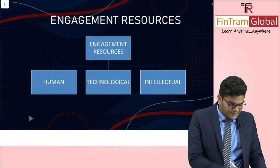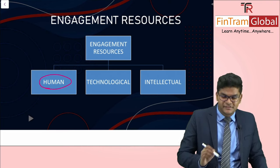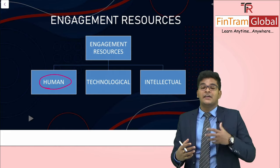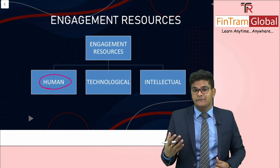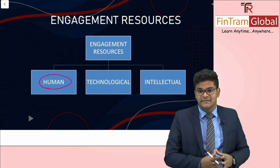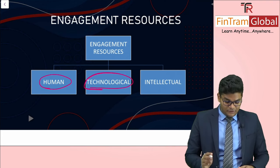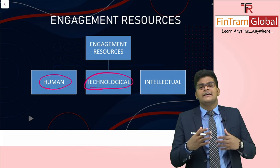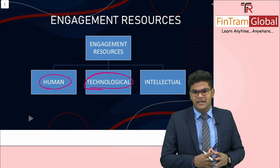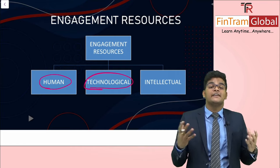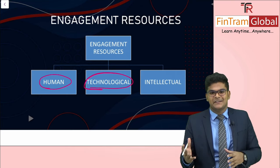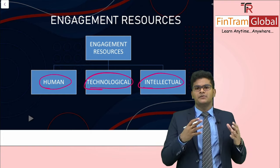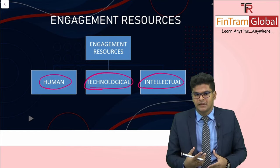Moving on to the engagement resources element, we consider three primary resources. First, human resources — this includes the audit staff, any external experts used, and internal auditors providing direct assistance. Second, technological resources — audit software and digital tools. Third, intellectual resources. All three must be sufficient to conduct a good quality audit.